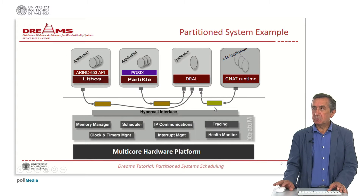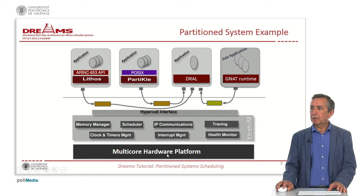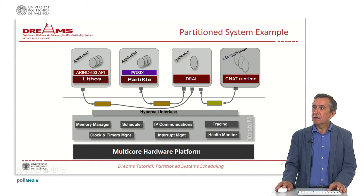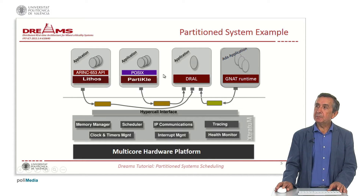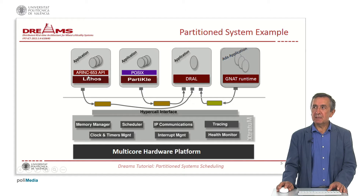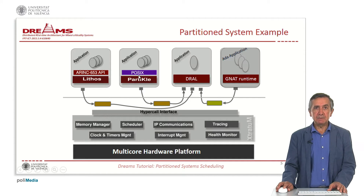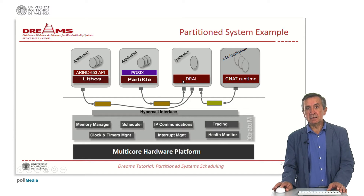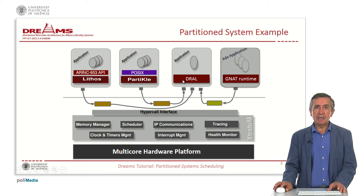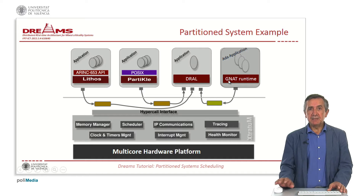This is an example where the hypervisor is Stratum. We have a multi-core hardware platform and on top of that several applications included in different partitions. In that case we require, for instance, an API like ARINC 653, or an RTOS with a POSIX API, or just the DREAMS abstraction layer DIRAL, or an ADA application with GNAT.